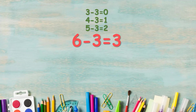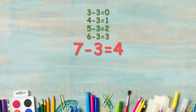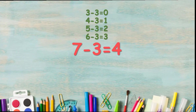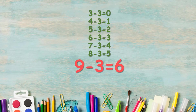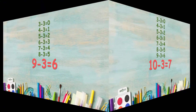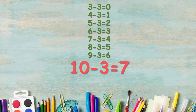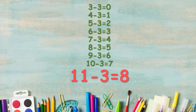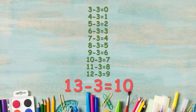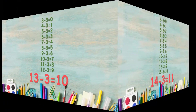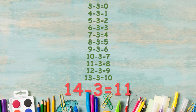7 minus 3 is equal to 4. 8 minus 3 is equal to 5. 9 minus 3 is equal to 6. 10 minus 3 is equal to 7. 11 minus 3 is equal to 8. 12 minus 3 is equal to 9. 13 minus 3 is equal to 10. 14 minus 3 is equal to 11.